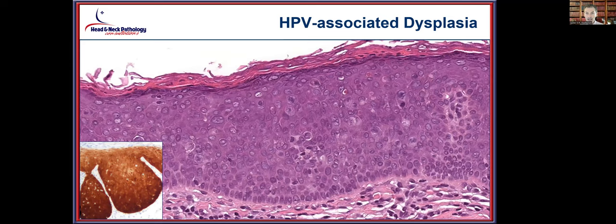HPV-associated dysplasia has a very characteristic histologic appearance in the oral cavity — not the oropharynx — where there is a karyorrhexis or dyskeratotic appearance to many cells, with the entire thickness of the epithelium completely disorganized and lacking maturation toward the surface. This has a strong association with HPV, whether documented by p16 or in situ hybridization to high-risk HPV. It is not recommended that every dysplastic oral cavity lesion have p16 or high-risk HPV testing, but in this specific and unique setting, that additional testing can be performed.